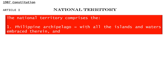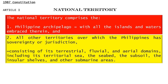all other territories over which the Philippines has sovereignty or jurisdiction, consisting of its terrestrial, fluvial, and aerial domains, including its territorial sea, the seabed, the subsoil, the insular shelves, and other submarine areas.